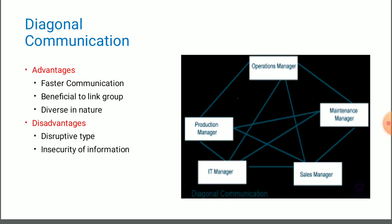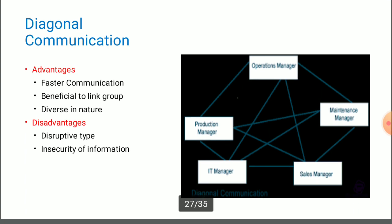In an organization, there are different types of managers who work at different positions. Somebody is working as a boss, somebody is working as an employee, according to their designations. Though their status and levels are different, whenever there is a problem and they want to talk with each other, they talk. For example, operation manager wants to talk with IT manager directly, he can talk with IT manager.